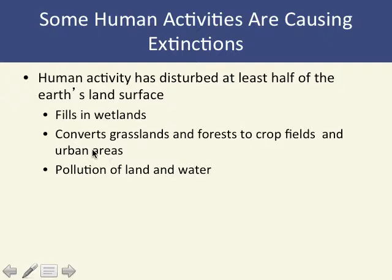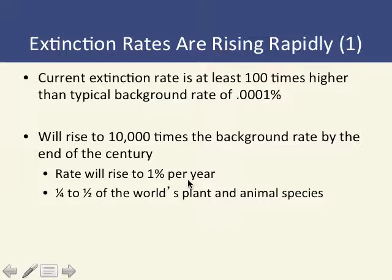Urban and suburban sprawl — like what's happening in Grimes in 2017 — is converting large amounts of cropland into housing developments. Pollution, whether water or air, also contributes. The current extinction rate is 100 to 1,000 times larger than the typical background extinction rate, and it could grow to 10,000 times by the end of the century. This means we could lose one quarter to one half of the world's plant and animal species.